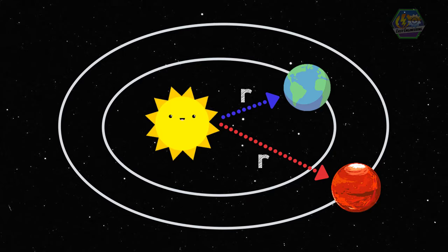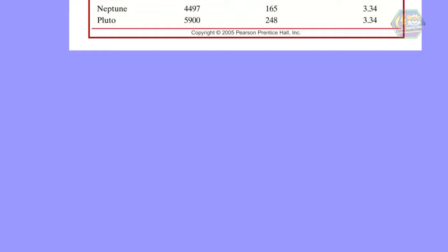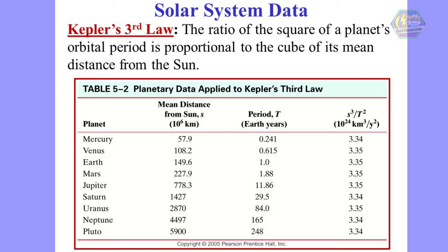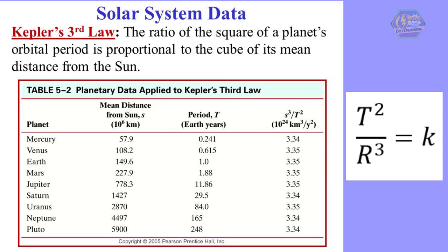Kepler's third law means how long a planet takes to go around the Sun — its period — is related to the planet's mean distance from the Sun. That is, the square of the period divided by the cube of the mean distance is equal to a constant. For every planet, no matter what its period or distance, T² over R³ is the same number.